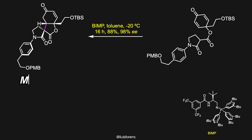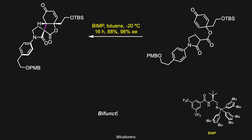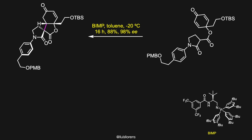The next step is an enantioselective organocatalyzed Michael addition. This enantioselective desymmetrization reaction was carried out with a bifunctional iminophosphorane organocatalyst, which can promote rapid and highly enantioselective Michael additions of pronucleophiles to this cyclohexadienone. BIMP catalysts are a class of chiral organocatalysts comprising a hydrogen bond donor moiety and a strongly basic iminophosphorane linked through a chiral backbone. The protonation of the malonate ester by the BIMP catalyst results in a stereoselective Michael addition to the enone.